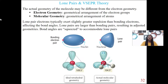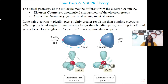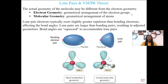With VSEPR theory, we have to talk about lone pairs. There are instances when we draw our Lewis structures where you might have a lone pair on your central atom. Geometries are going to be a little bit different if you have lone pairs or not. Electron geometry is the arrangement of your electron groups, while molecular geometry is the arrangement of your atoms — so electron geometry includes those lone pairs. Lone pair electrons are going to have a greater repulsion than your standard bonding electrons.